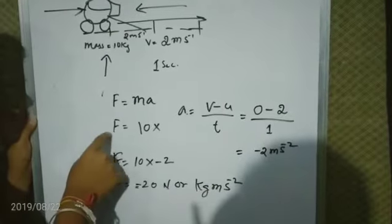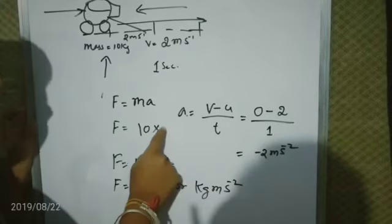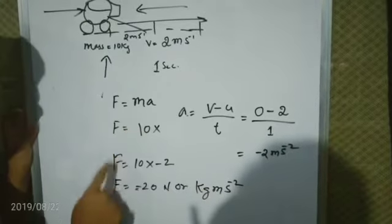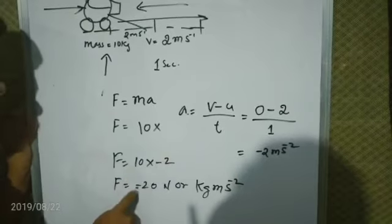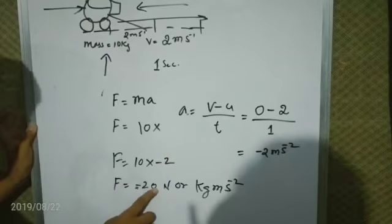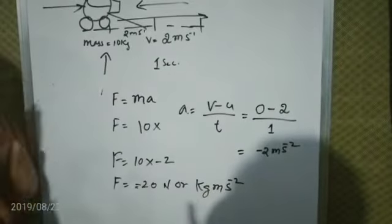Using the formula, force equals 10 times minus 2. F equals minus 20 N or kg meters per second squared.